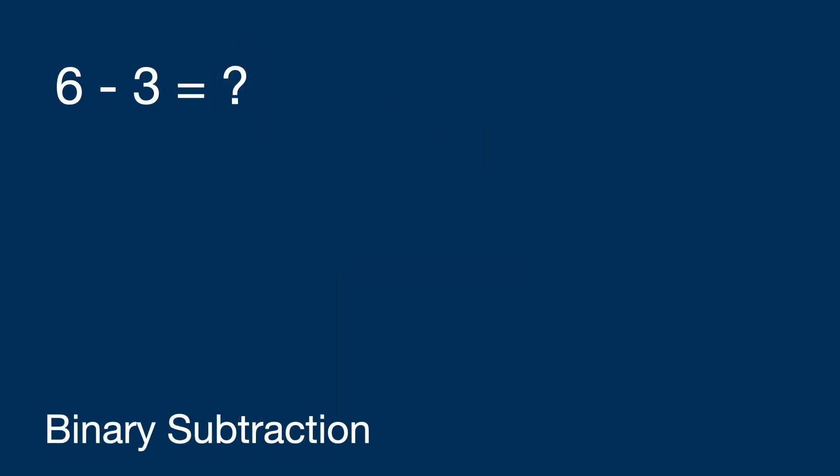Binary subtraction also works like its decimal counterpart. We will still use six and three, or one-one-zero and one-one in binary. Since zero minus one isn't really possible, we borrow from the left so that the answer becomes one. Normally one minus one equals zero, but since we borrowed from it, it effectively becomes zero minus one. We then do the same thing and borrow from the left. Now one minus one minus zero equals zero. The result is zero-one-one, or three in decimal.